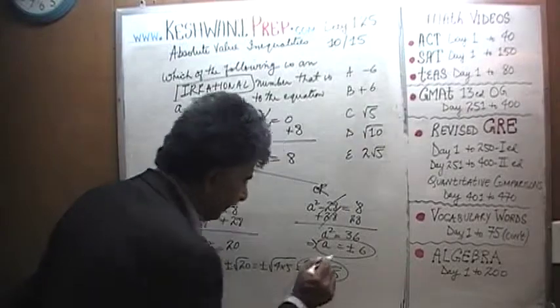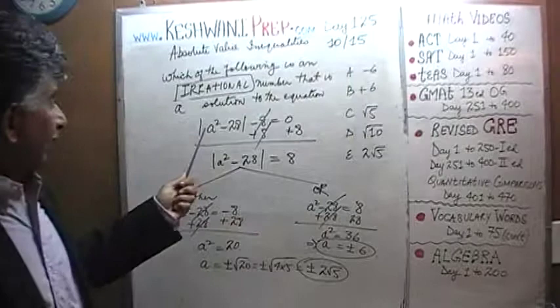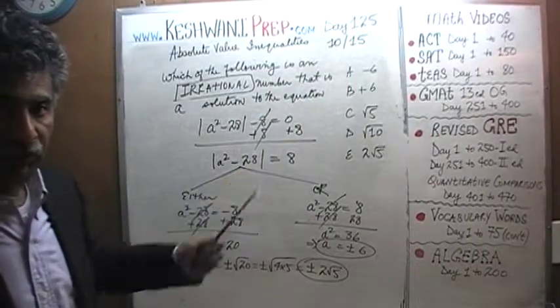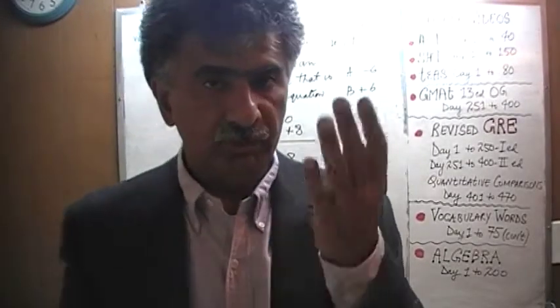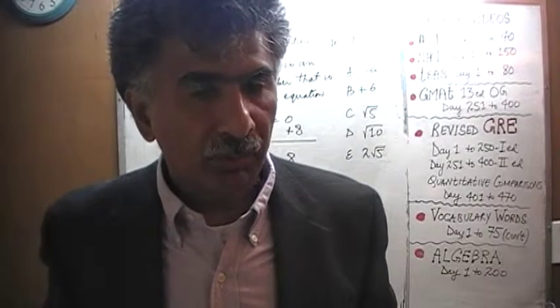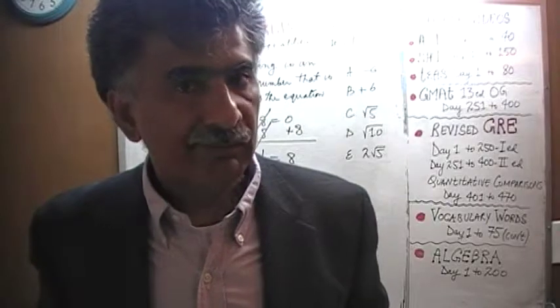So it turns out that this equation that is given to us, absolute value of a squared minus 28 minus 8 equals 0, turns out it has 4 solutions. There are 4 possible values of a that can be employed. And all 4 of those possible values of a will satisfy this equation.